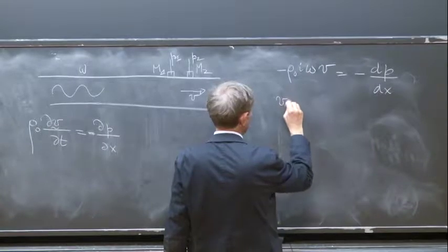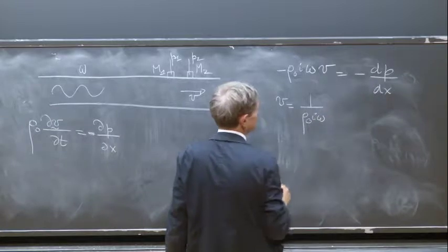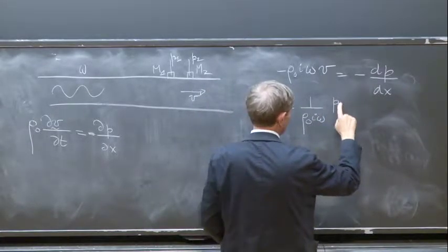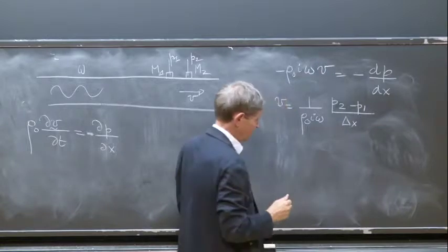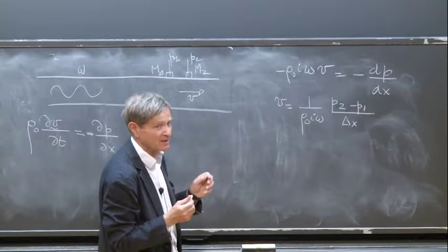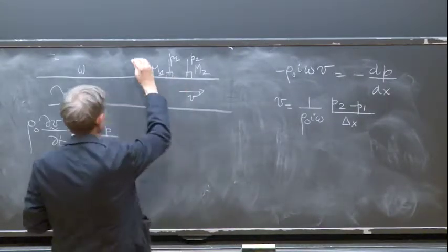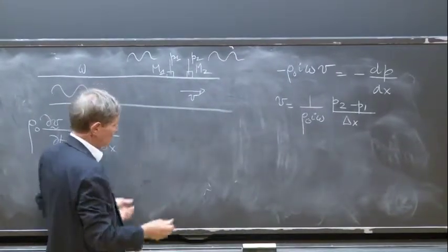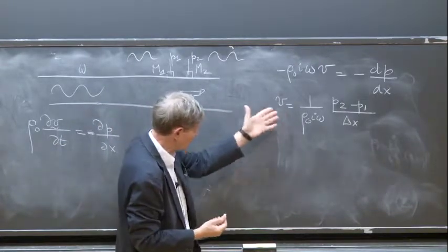In principle, you can write V is equal to 1 over rho0 times i omega, times (P2 minus P1) divided by the distance delta x. But to be able to do that, you have to calculate the complex signal, since these are real signals.